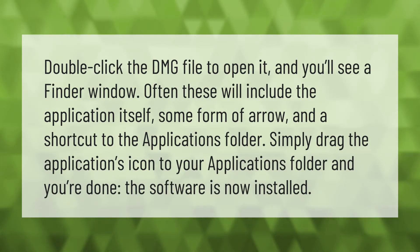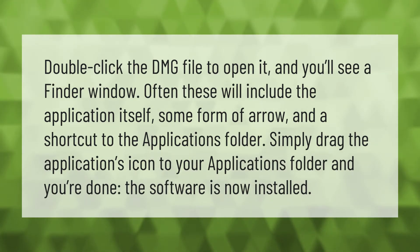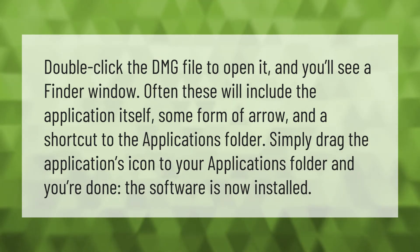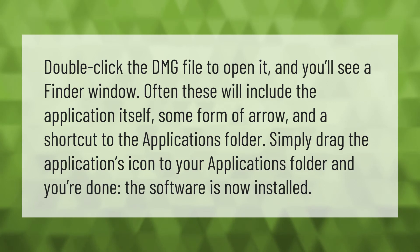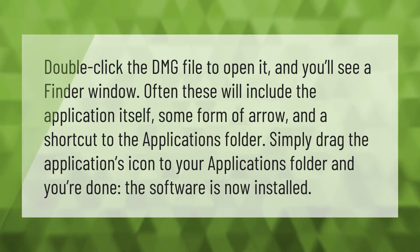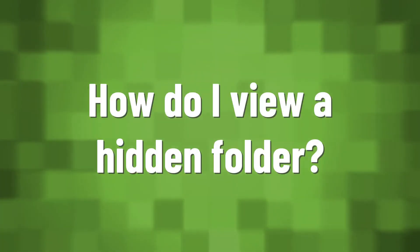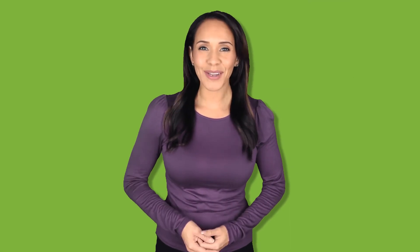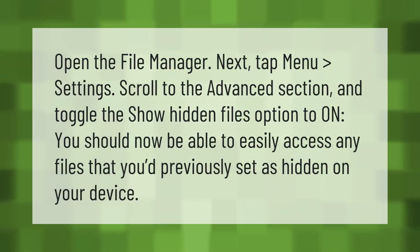Double-click the DMG file to open it and you'll see a Finder window. Often these will include the application itself, some form of arrow, and a shortcut to the Applications folder. Simply drag the application icon to your Applications folder and you're done — the software is now installed.